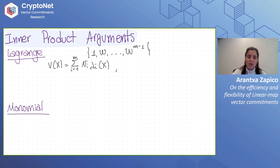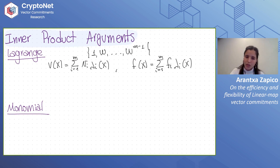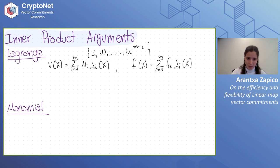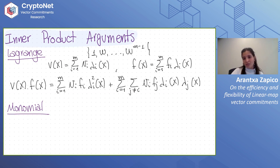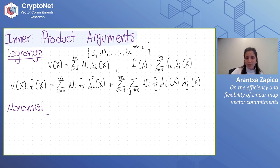We note that lambda_i evaluated at omega^i equals 1 and 0 otherwise. Multiplying the two polynomials gives all cross terms. We separate terms where v and f share index from those where they don't. Where they don't share index, the product of non-overlapping Lagrange polynomials is divisible by the vanishing polynomial of the set. Where they do share index, the lambda_i squared terms can also be reduced by dividing by the vanishing polynomial, yielding a clean expression.